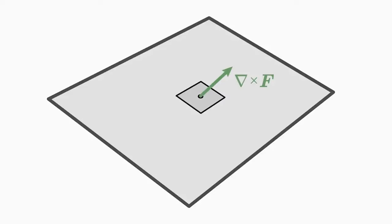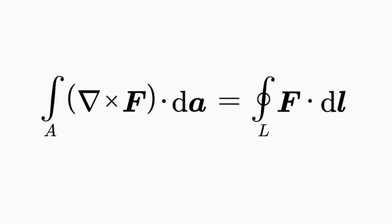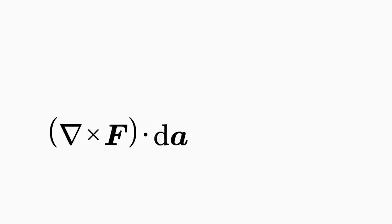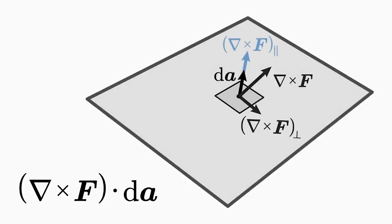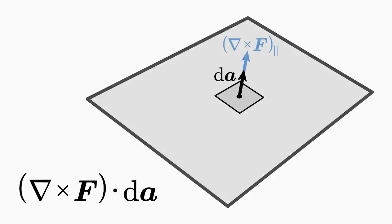This new vector states how much of the field f rotates around a point within the surface A. Then the scalar product is formed between the vector field nabla cross f and the infinitesimal surface element dA. Thus, only the part of nabla cross f is picked out which runs parallel to the surface element. Since the surface element is orthogonal to the surface A, the scalar product picks out only the part of the vector field nabla cross f which is also orthogonal to the surface A.